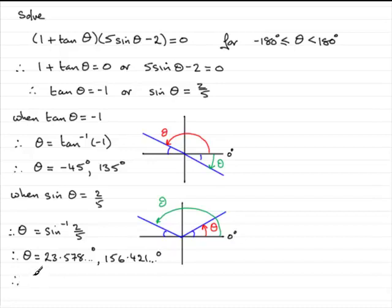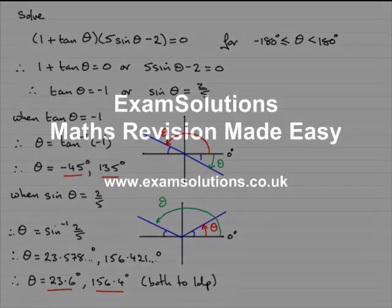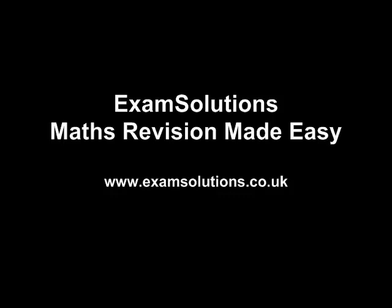So therefore, if we round these two angles up to say one decimal place, we're going to have 23.6 degrees and 156.4 degrees. And if we just say both to one decimal place, then we've got the solutions to our equation. We've got θ = -45°, 135°, 23.6° and 156.4°, where these ones are both to 1dp. So that brings us now to the end of the first part of this question.